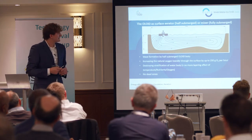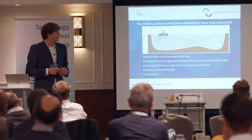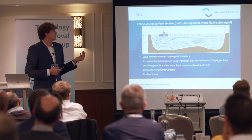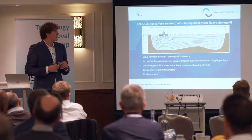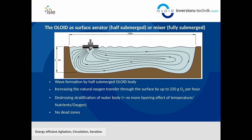In some applications where the required aeration level is not so high, the Oloid can also introduce oxygen itself. This depends on how deep the Oloid is submerged. If submerged completely, it acts only as a mixer. If positioned at the surface, it generates waves, which increase the surface area, allowing oxygen to naturally enter the water. Mechanically, the Oloid moving at the surface also sucks oxygen inside.